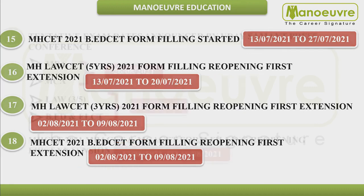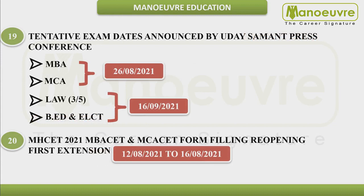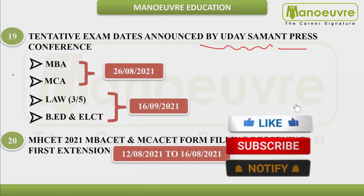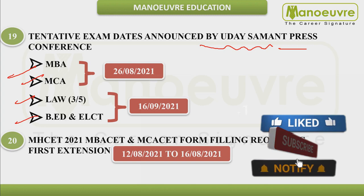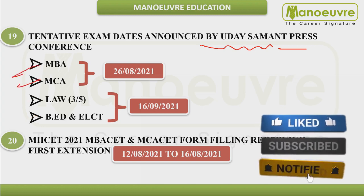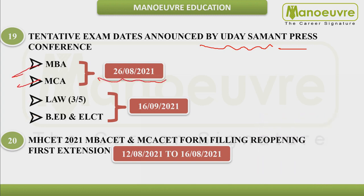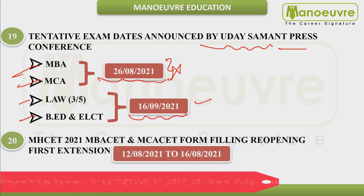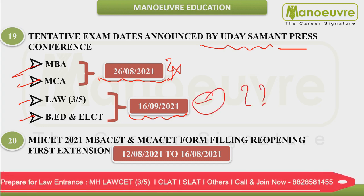After the August 9th form filling deadline, exam dates were announced again via a press conference by Uday Samant — MBA and MCA on 26th August, and Law and B.Ed on 16th September. However, these dates have already passed, so they have no relevance now. Whether the remaining dates will still see exams is a question mark.